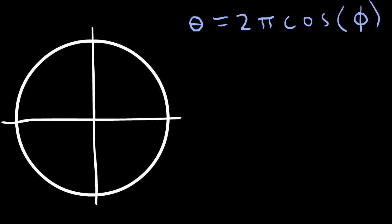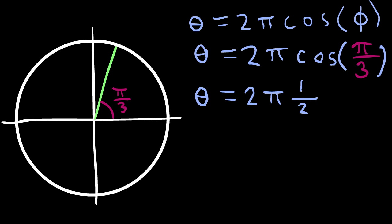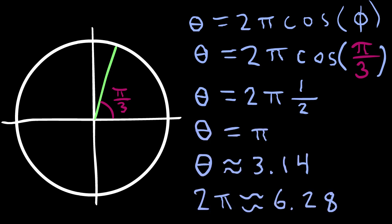If, on the other hand, you have a really steep angle, then cos(φ) is closer to 0, and thus 2π is diminished a lot more, and you have a smaller angle of the circle sector.